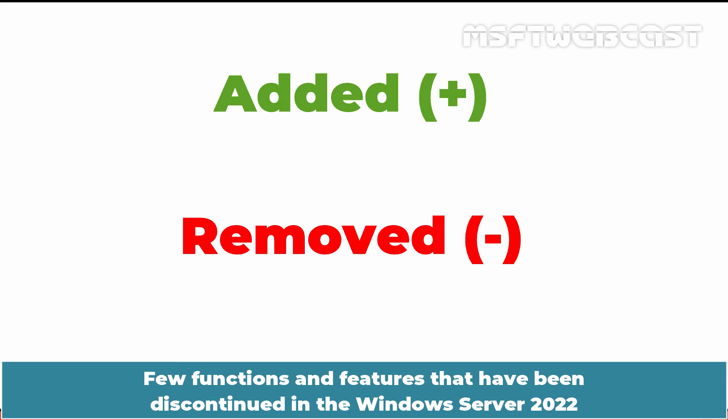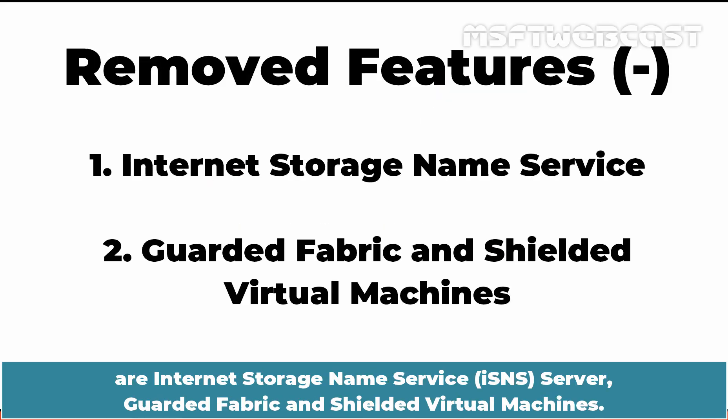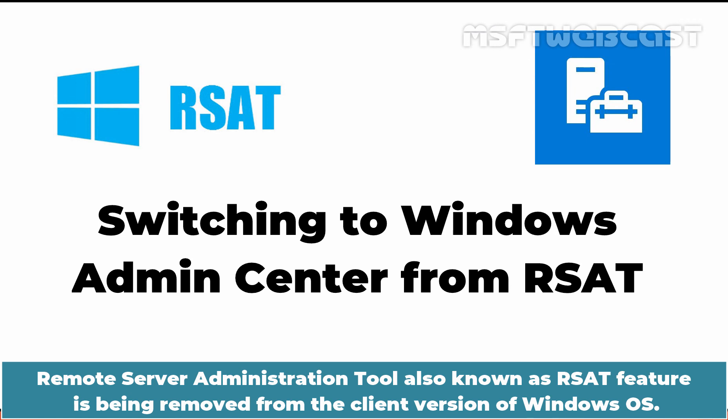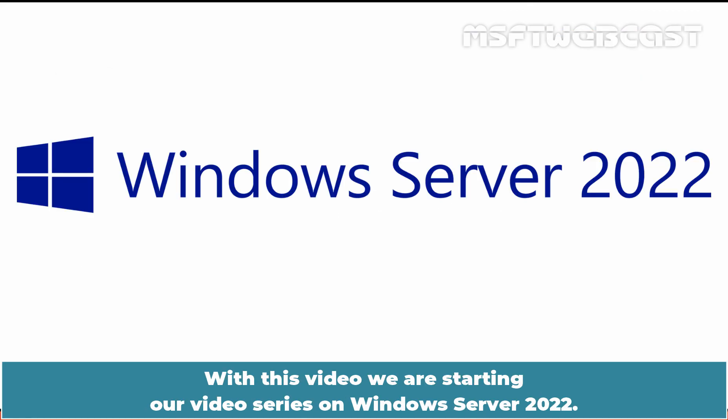A few functions and features that have been discontinued in Windows Server 2022 are Internet Storage Name Service Server, Guarded Fabric, and Shielded Virtual Machines. The deployment features of the WDS operating system are partly deprecated. The Remote Server Administration Tool, also known as RSAT, is being removed from the client version of Windows OS.